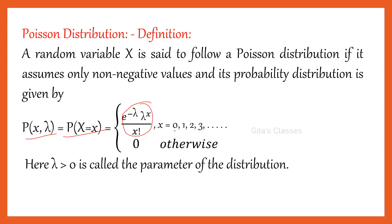Here X can take the values 0, 1, 2, 3, etc., up to infinity — it can go up to infinity. Recall that in binomial distribution, X can take values from 0 to n only. Here, lambda is called the parameter of the distribution because it uniquely defines the distribution. That is why it is called the parameter of the Poisson distribution.